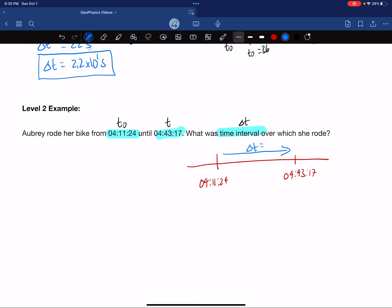We can list our givens: t0 is 04:11:24, and the instant at the end of our period of concern is 04:43:17. We are looking for delta t. Our formula is delta t equals t minus t0.